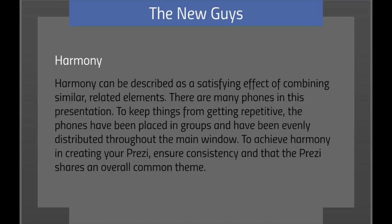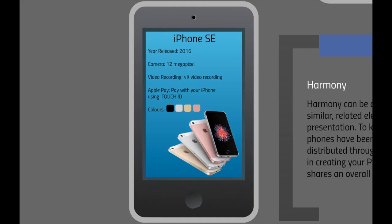Harmony. In design, combining similar or related elements into an artifact can create a satisfying feeling for a viewer. This is known as harmony. Distributing your content throughout a Prezi into similar groups, rather than placing everything together in one big bunch or spreading everything out individually, helps to create this feeling. To achieve harmony when creating your Prezi, ensure consistency in that the Prezi shares an overall theme. Notice that this particular iPhone has four different colors. By grouping them together, rather than stacking them vertically or spreading them out horizontally, it creates a smaller area for a viewer to be able to see all of the colors in one place.